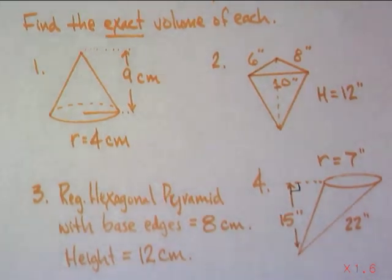So, the first one is a cone. Radius is four. Height is nine. Second one is a triangular pyramid. Three is a regular hexagonal pyramid with base edges of eight centimeters and height of twelve. And then an oblique cone here with seven, twenty-two, fifteen as marked. Good luck. We shall see you tomorrow.